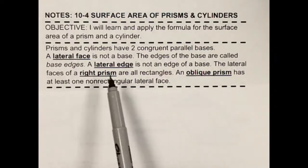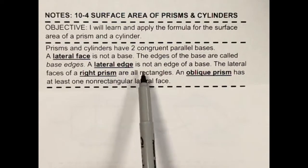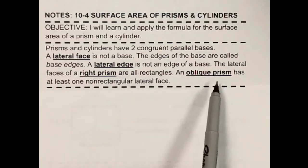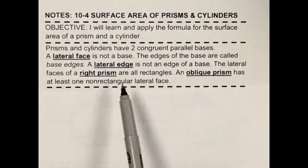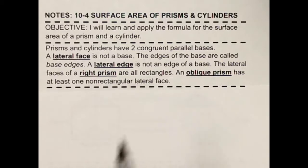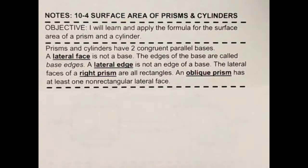The edges of the base are called base edges. A lateral edge is an edge not on the base. The lateral faces of a prism are all rectangles — that's going to be another important sentence. You also have to remember that an oblique prism has at least one non-rectangular lateral surface.